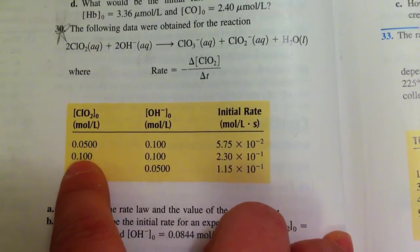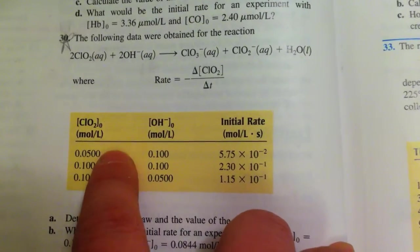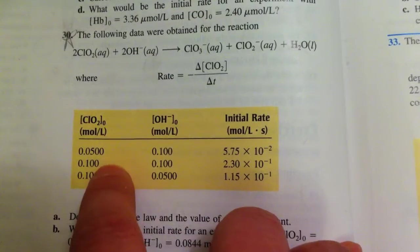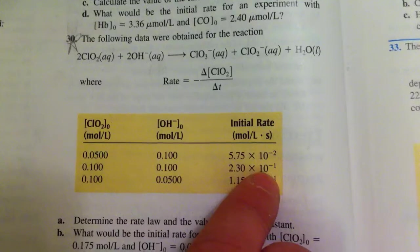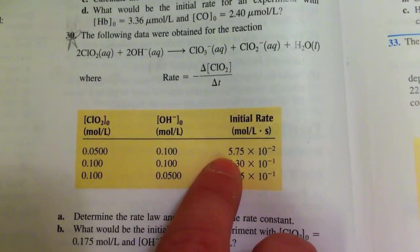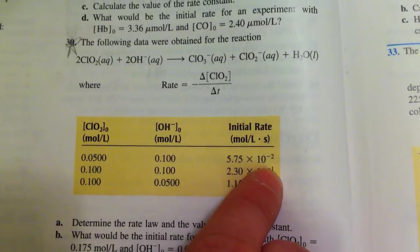So if I take 0.1 divided by 0.05, I will get 2. So I see that the change between here to here is that it has been doubled. If you take 0.23 times 10 to the negative first, divide 5.75 times 10 to the negative second,